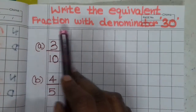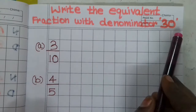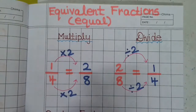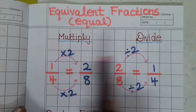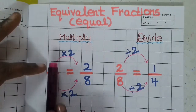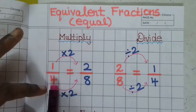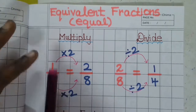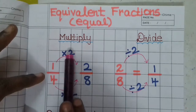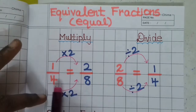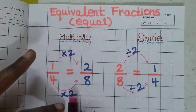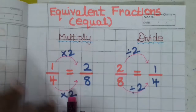Write the equivalent fraction with denominator 30. The answer's denominator part must be 30. For equivalent fractions, or equal fractions, we use multiplication and division. The fraction has two parts: the top one is called the numerator and the bottom one is called the denominator. You can multiply or divide the same number on both numerator and denominator.